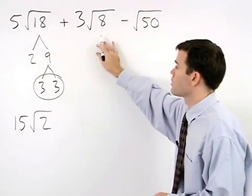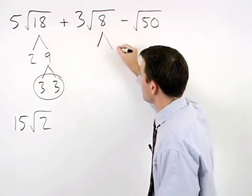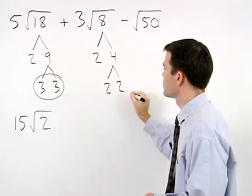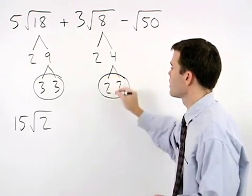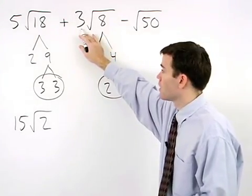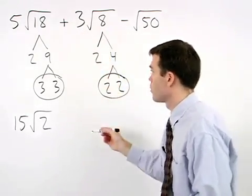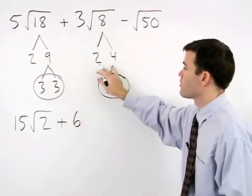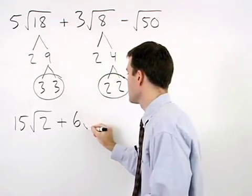In the second term, 8 factors as 2 times 4, and 4 is 2 times 2. So a 2 comes out, which multiplies by the 3 that's already out there, to give us 2 times 3, or 6. And again, we're left with a 2 inside the radical.